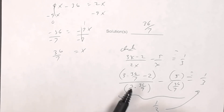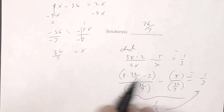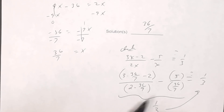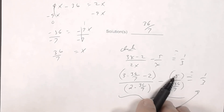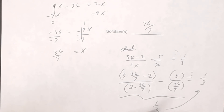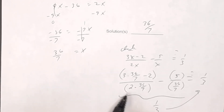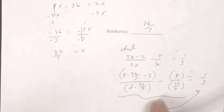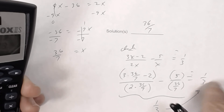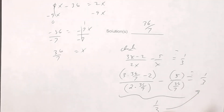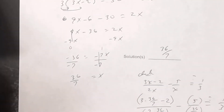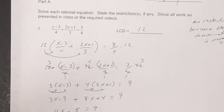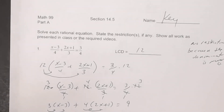When checking, always put numerators and denominators in parentheses, even single terms, because there are many operations involved. If you leave parentheses off, the calculator may compute something different from what you intend. That is the key to section 14.5 part A.